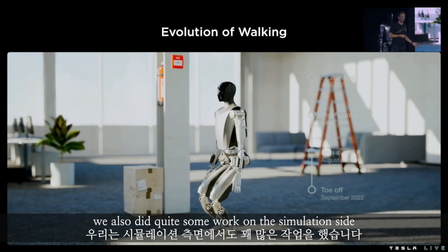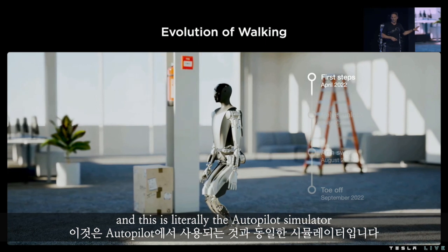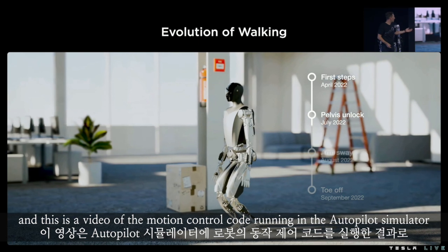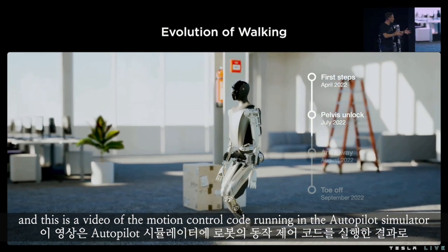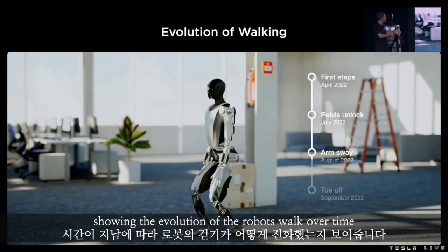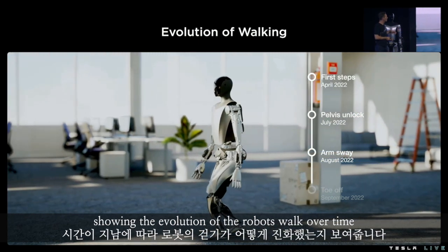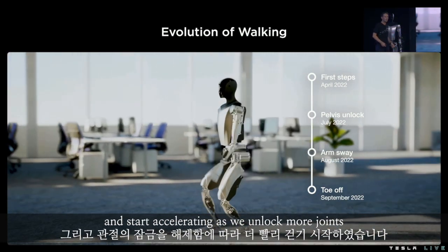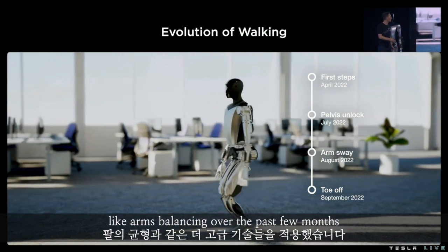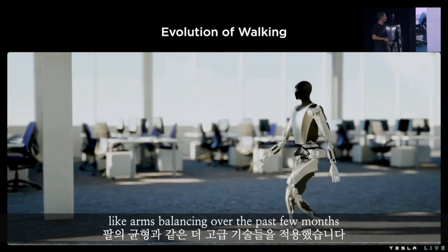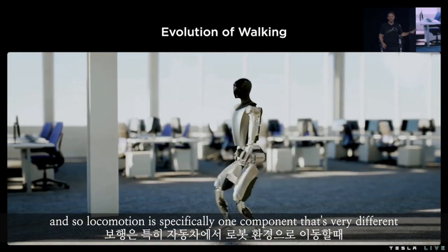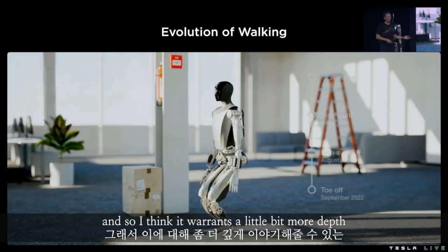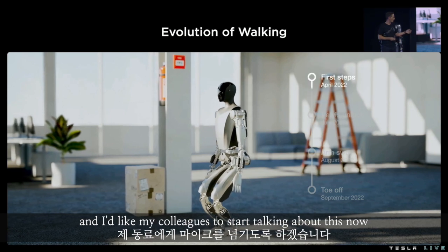We also did quite a bit of work on the simulation side. This is literally the Autopilot simulator, into which we've integrated the robot's locomotion code. This video shows the motion control code running in the Autopilot simulator, showing the evolution of the robot's walk over time. We started quite slowly in April and accelerated as we unlocked more joints and deployed more advanced techniques like arm balancing. Locomotion is specifically one component that's very different in the bot's environment compared to the car.